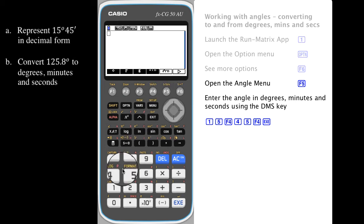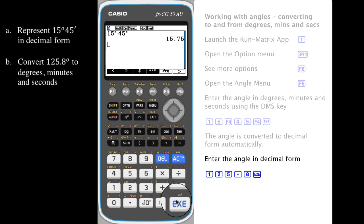To enter an angle in degrees, minutes, and seconds, use the DMS key. For example, 15 degrees 45 minutes.